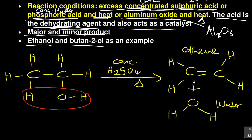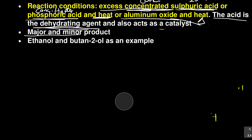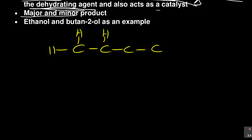There is no major product and no minor product for ethanol because it's just two carbons. But when you talk about butan-2-ol, the story changes. That's why we start dealing with minor and major products. Let's look at butan-2-ol — carbon one, two, three, four — with the OH group on carbon number two.